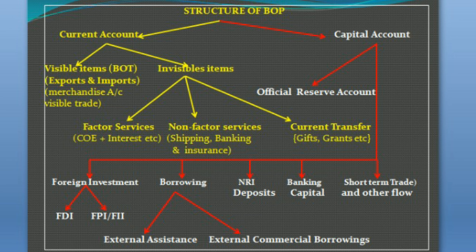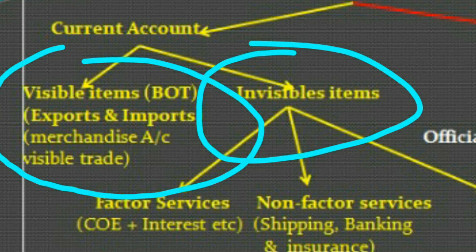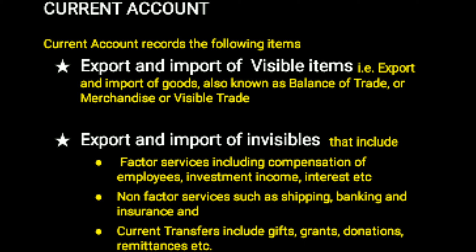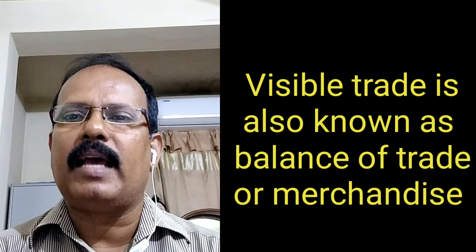I am going to explain the structure of balance of payment in a single chart. If you follow this chart, you will get the complete idea of balance of payment. In this chart, the left-hand side shows current account and the right-hand side shows capital account. Current account has visible items and invisible items. Visible items refer to goods only — tangible goods with physical appearance — and this includes exports and imports. This visible trade is also called balance of trade and is also known as merchandise account.